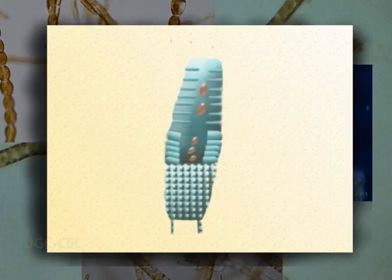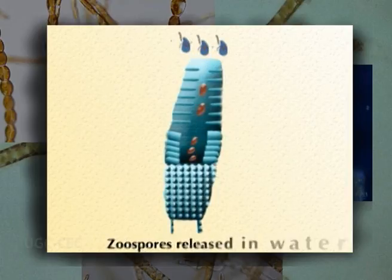Each unit then metamorphoses into a single uninucleate and diploid biflagellate zoospore. The zoospores formed from plurilocular sporangia are similar to meiospores developed in unilocular sporangia but are diploid in nature. The zoospores of plurilocular sporangia liberate through an apical or lateral aperture and on germination produce the sporophytic or diploid plants.